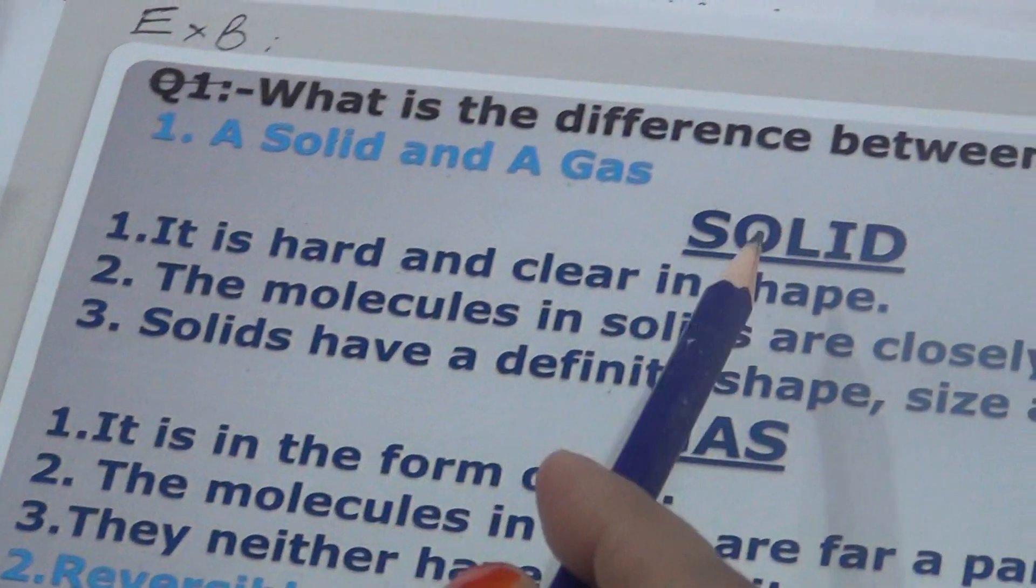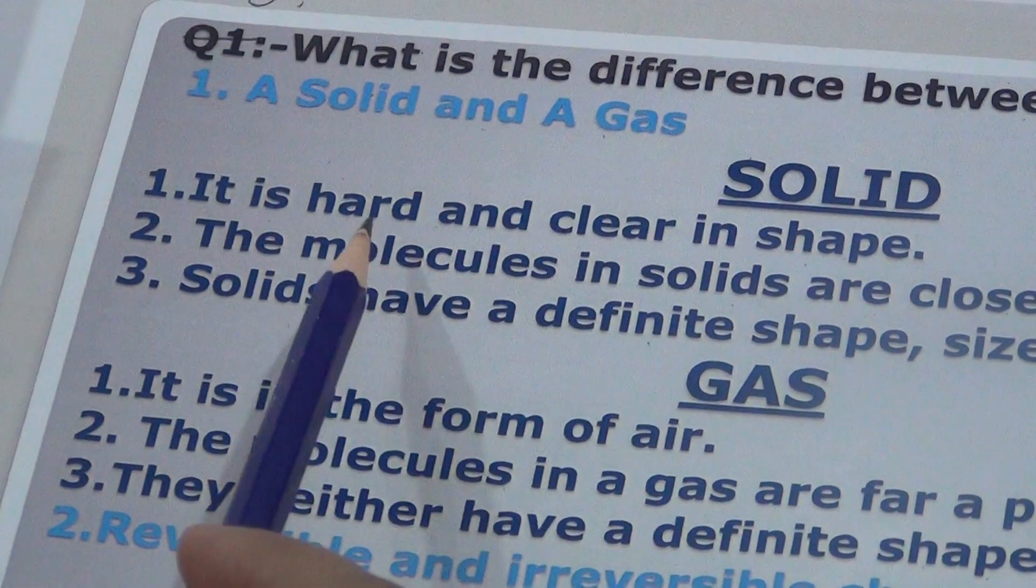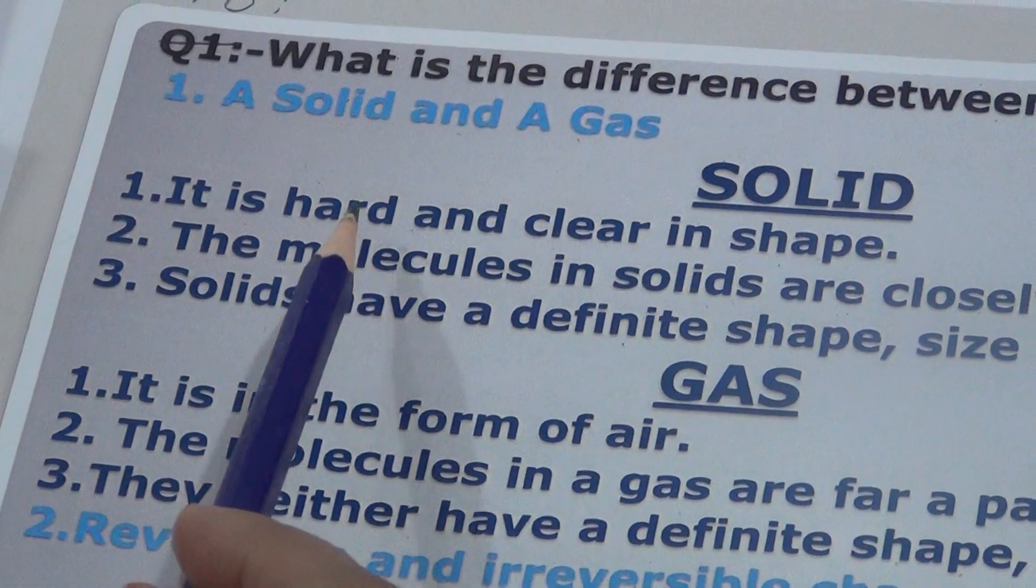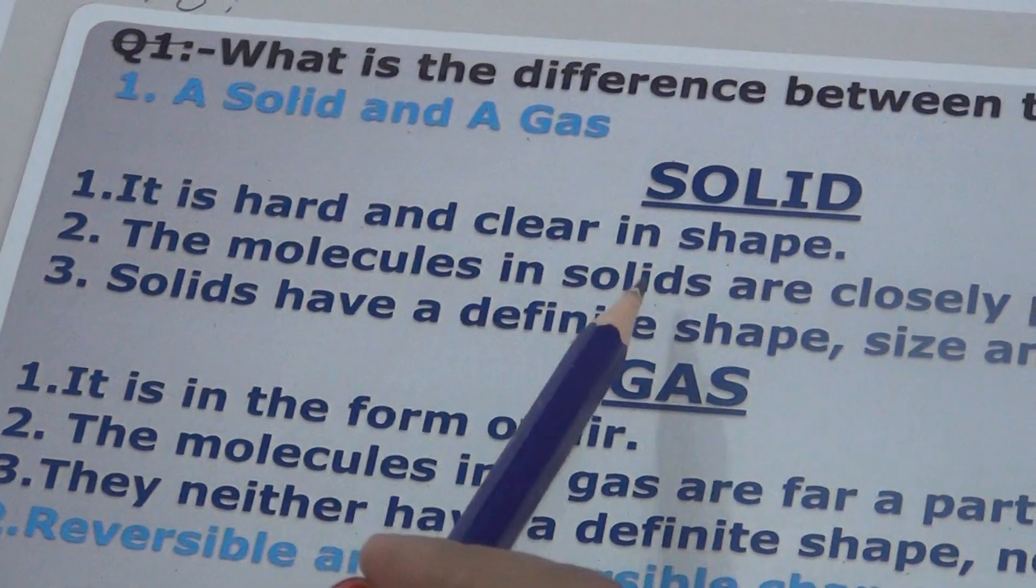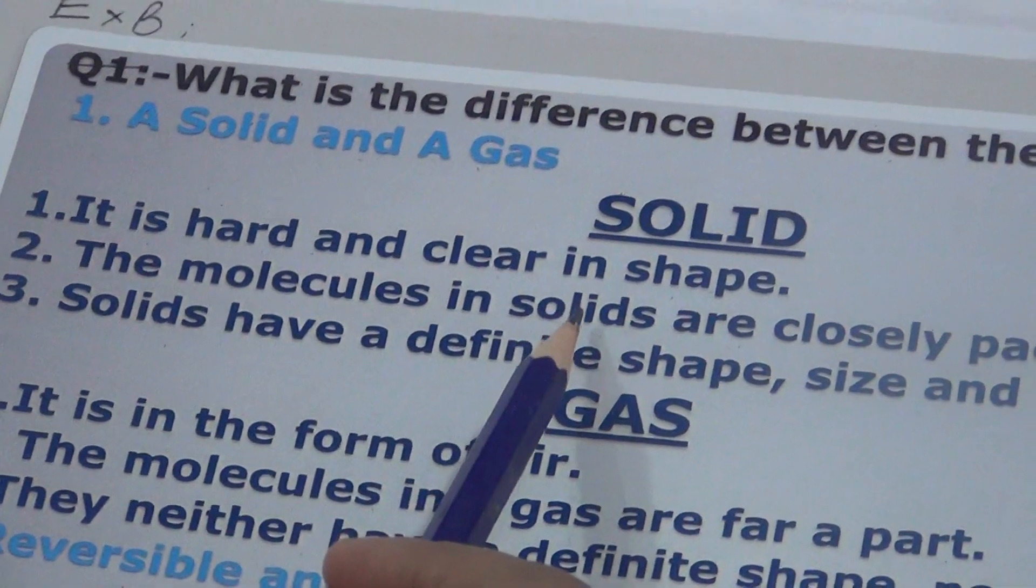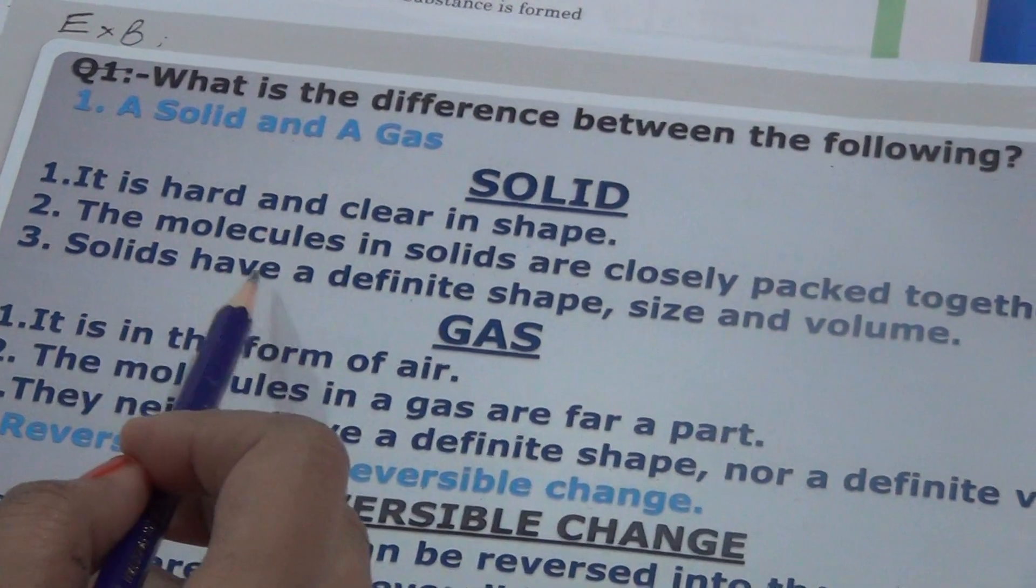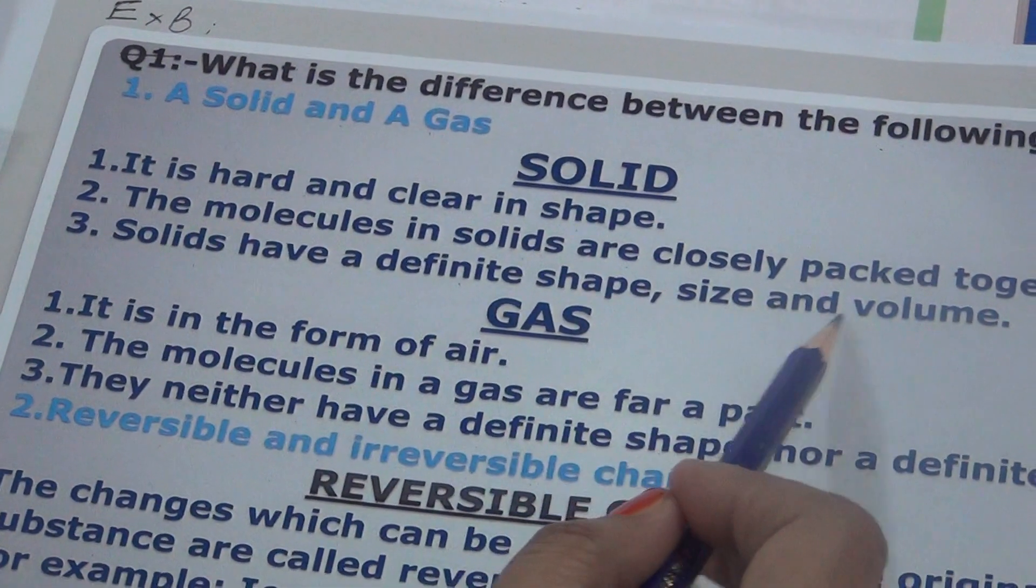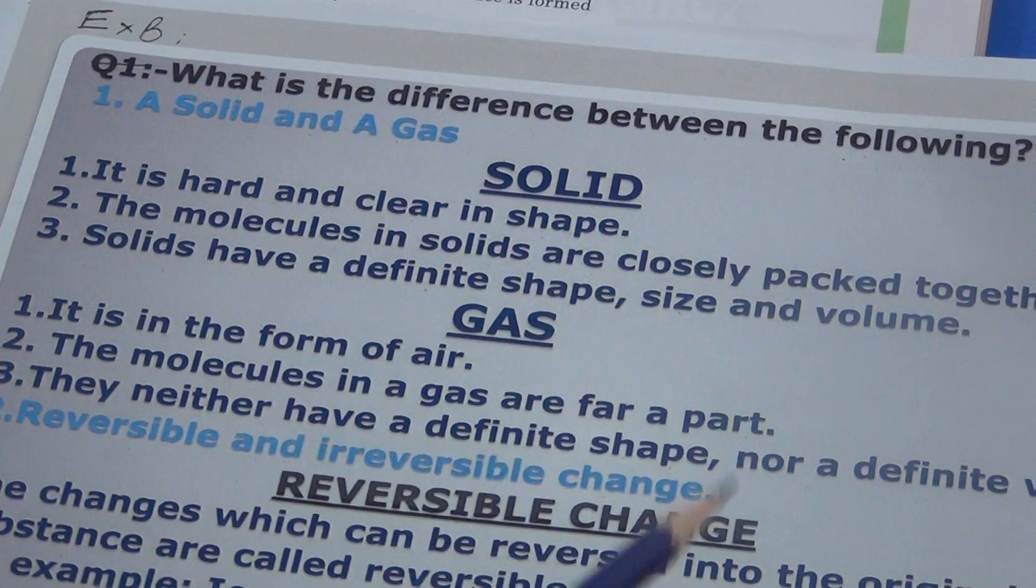Now you have differences. Solid: it is hard and clear in shape. The molecules in solids are closely packed together. Solids have a definite shape, size and volume.